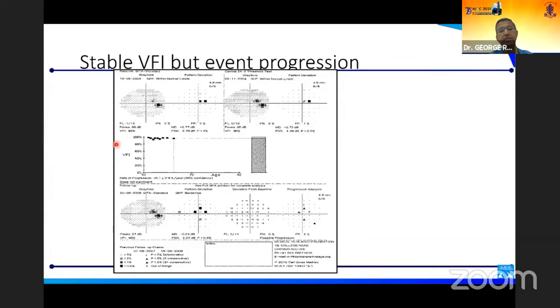This is flagged as possible progression by the machine itself once you have more than three points getting worse. Here you have something with a stable visual field index. There is no trend abnormal, but you are seeing points on the event analysis which are abnormal. So you need to look at both together because if you have very localized change, it may not be enough to change the VFI significantly to generate a trend analysis. You need to look at both in order to take a final decision. So you have a stable VFI with localized progression.